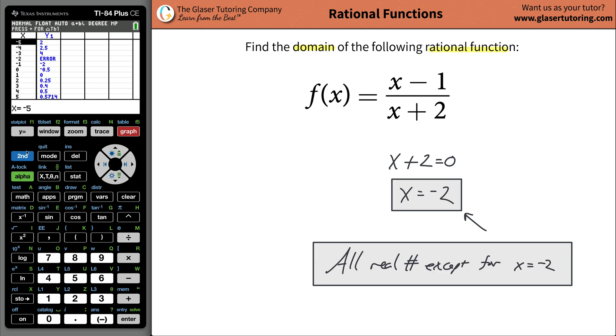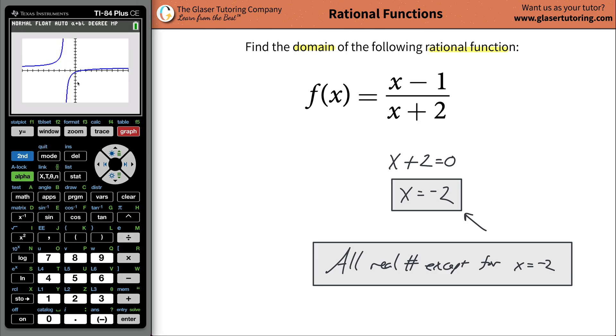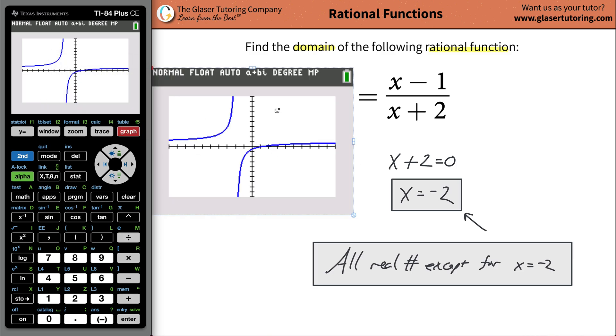And also from the graph, if you notice, if you notice from the graph, you see at negative 2, when x is negative 2, you start to see this thing hitting a vertical asymptote maybe. Right? That's for another video.